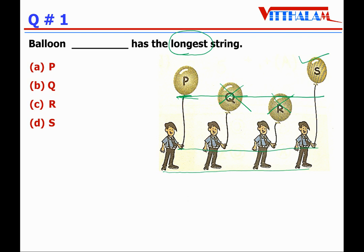सबसे बड़ा है P, उससे छोटा है, तो हमारा answer C आएगा। Longest string is balloon C, which has the longest string.